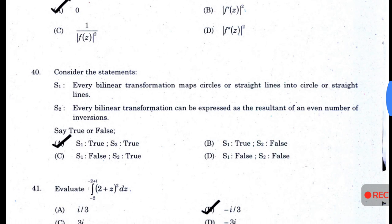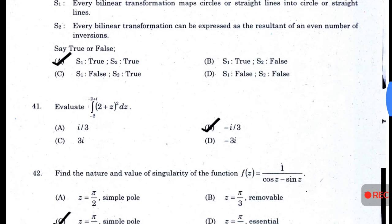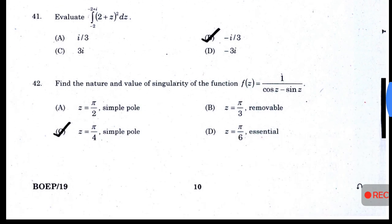Consider the statements S1 — is that true? — and S2 — also true; answer is A. Evaluate the integral — answer B — −i/3. Find the nature and value of singularity of the function f(z) = 1/(cos z − sin z) — answer is C: z = π/4, a simple pole.